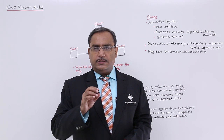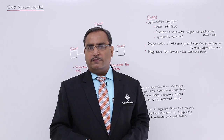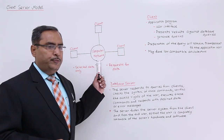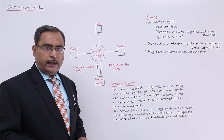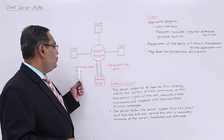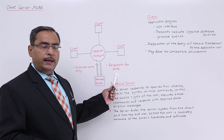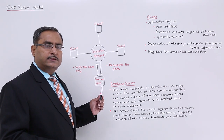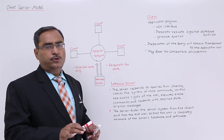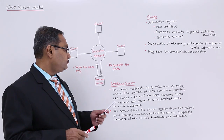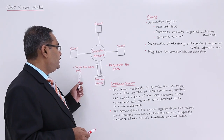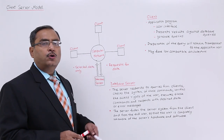This is the total story of the client-server model. Looking at the diagram: this is the computer network with multiple client machines connected, and this is the database server. From the clients, queries are generated and data is requested. The query is processed at the server end after checking user authenticity and access rights, and then only the selected data is made available to the respective client who generated the query.